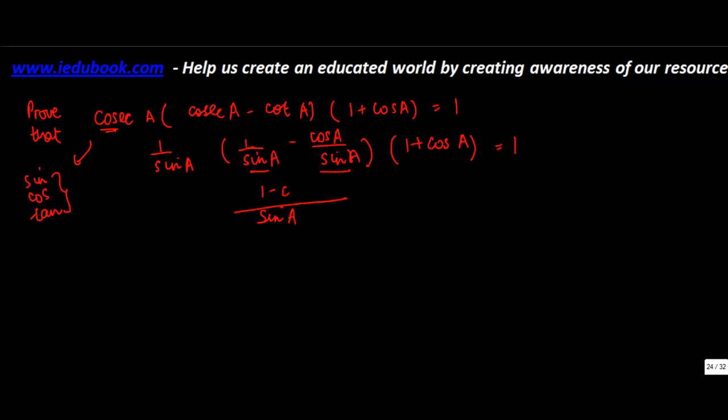I take sine A as common, so I get 1 minus cos A into 1 upon sine A into 1 plus cos A. I think we can multiply simply this into this.